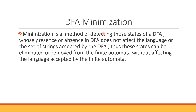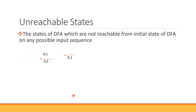DFA minimization is the definition — it is a method of detecting states of DFA whose presence or absence does not affect the language or the set of strings accepted by the DFA. These states can be eliminated or removed from the finite automata without affecting the language accepted by the finite automata. The states of DFA which are not reachable from the initial state of DFA on any possible input sequence are known as unreachable states.